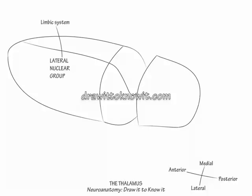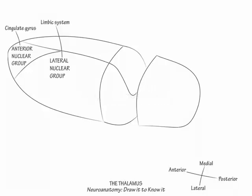Next, wedge a triangle in the anterior thalamus and label it as the anterior nuclear group, which is involved in the important memory circuit, the Papez circuit. Show that the anterior thalamic nucleus projects to the cingulate gyrus.